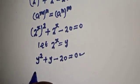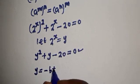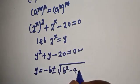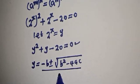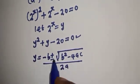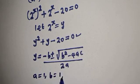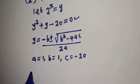Let's solve this using the quadratic general formula. Our quadratic general formula gives us: y is equal to minus b plus or minus square root of b squared minus 4ac, over 2a. And from this equation, a is equal to 1, b is equal to 1, and c is equal to minus 20.